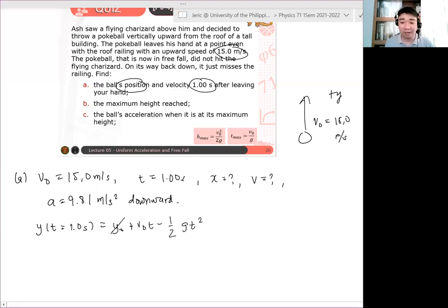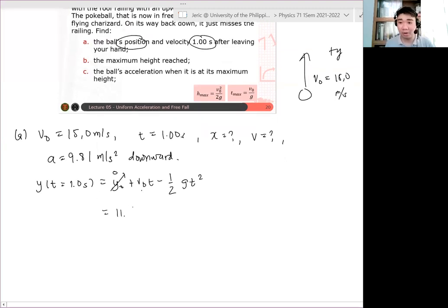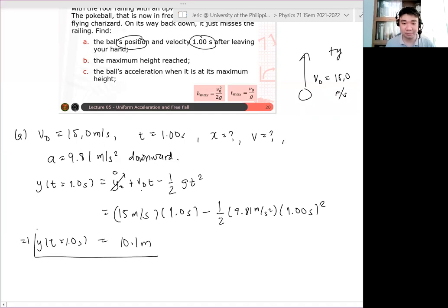Okay. So the y naught there is zero. The initial velocity is not zero. But and we can substitute here. So this is just, I'm sorry, 15. This is 15 meters per second multiplied by T which is 1.0 second minus one half times 9.81 meters per second squared times T which is one second ulit quantity squared. And we get y at T equals 1.0 second is about 10.1 meters.